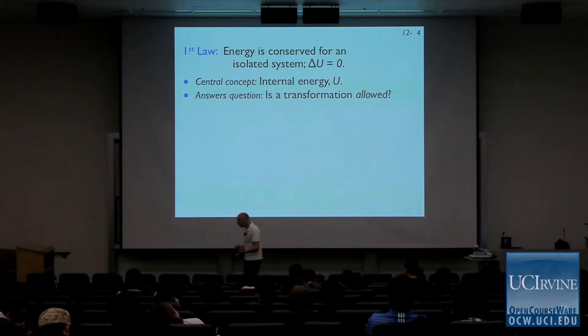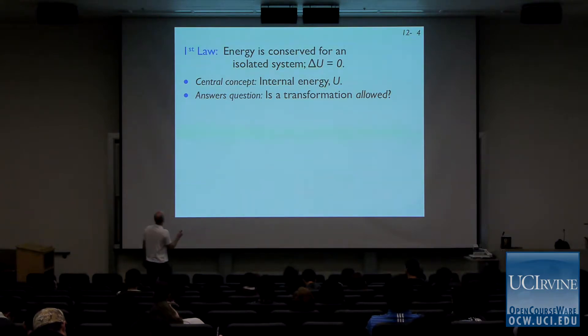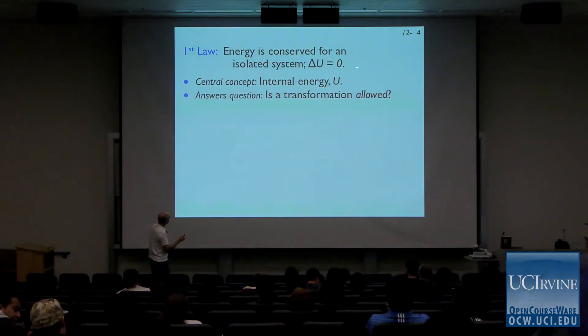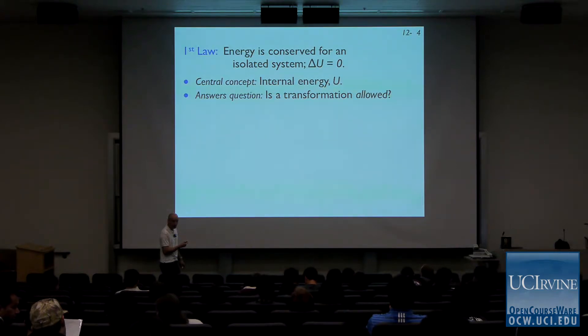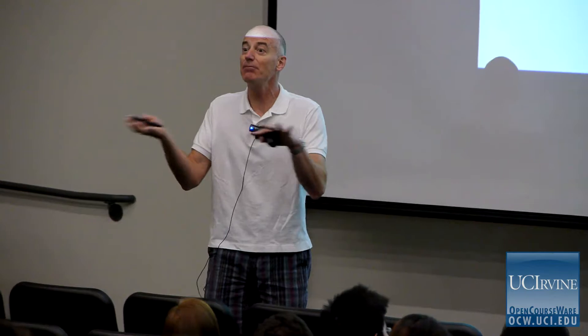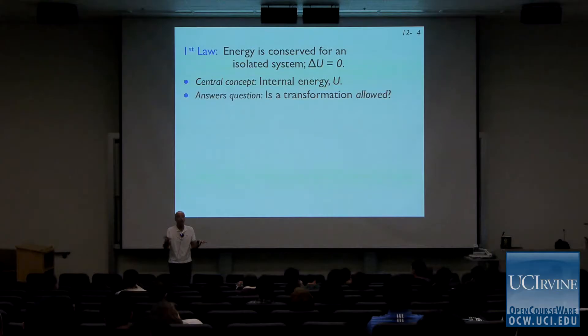In Chapter 14, we covered the first law — conservation of energy. Energy is conserved for an isolated system, meaning the change in internal energy equals zero for any process. The central concept is internal energy. What we learn from the first law is whether a transformation is allowed: a transformation that doesn't conserve energy is not allowed. But the first law only tells us a process is allowed, not whether it will actually happen.